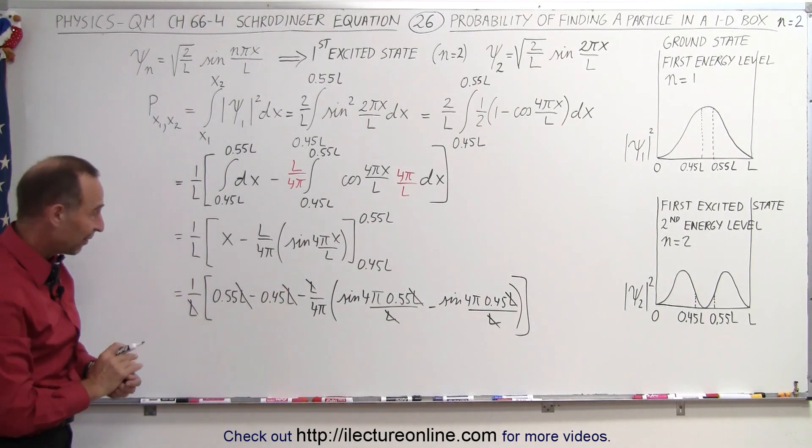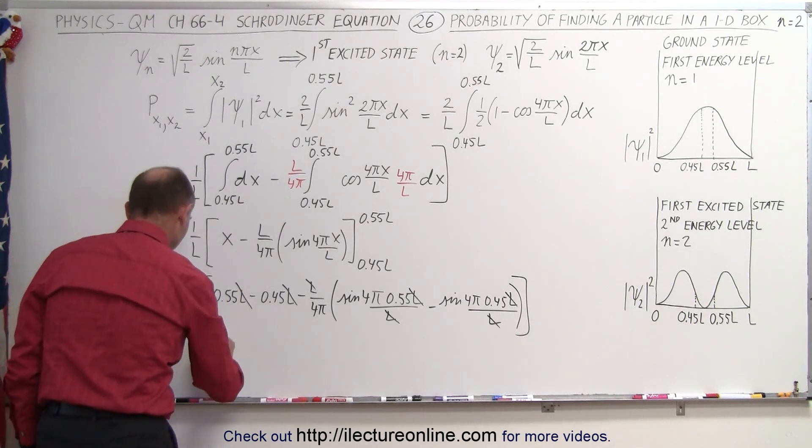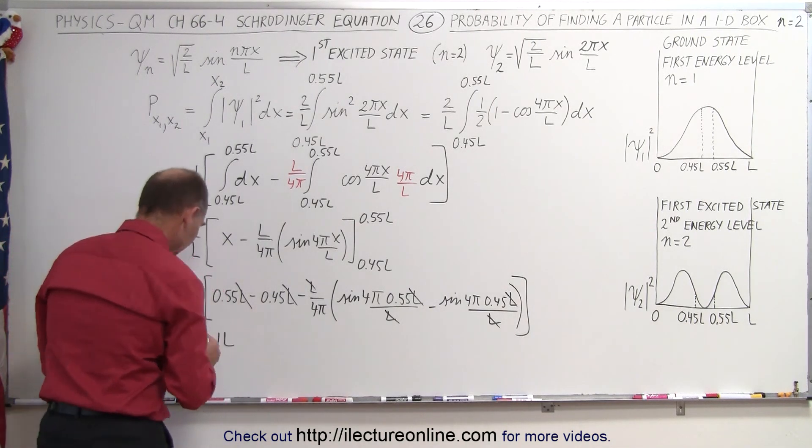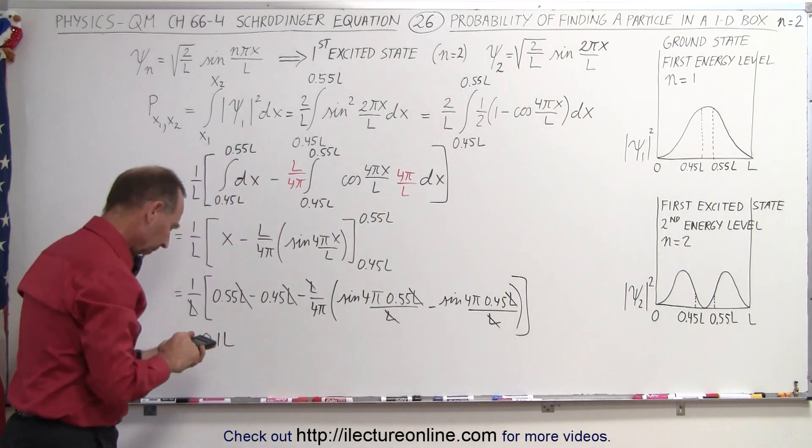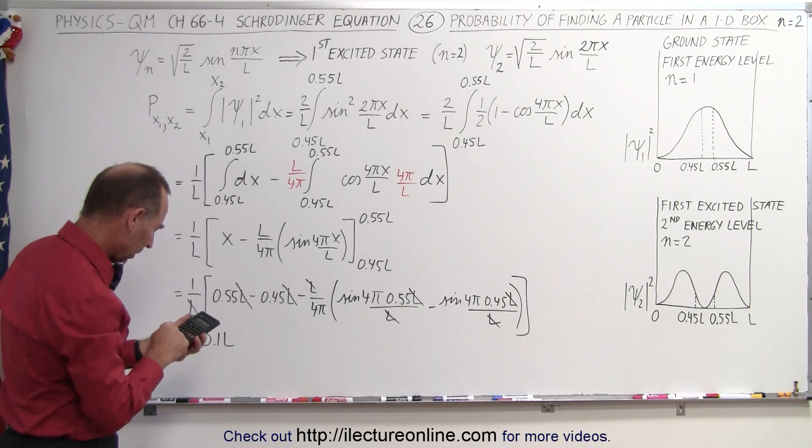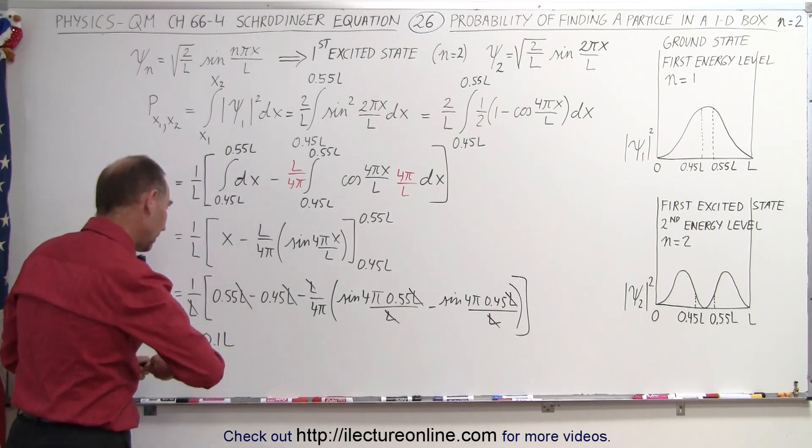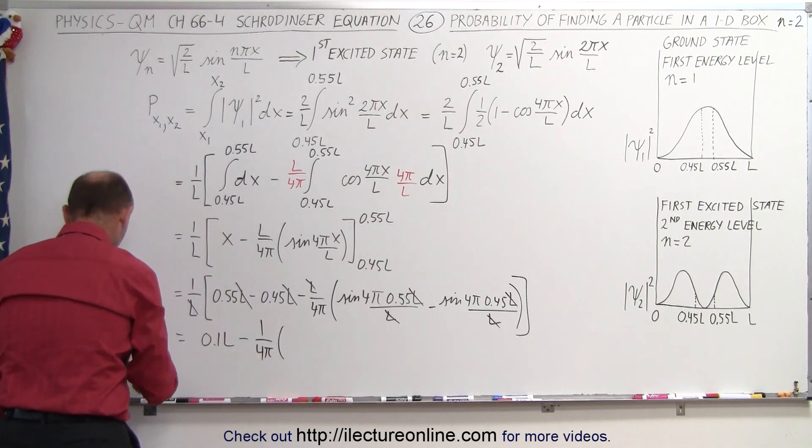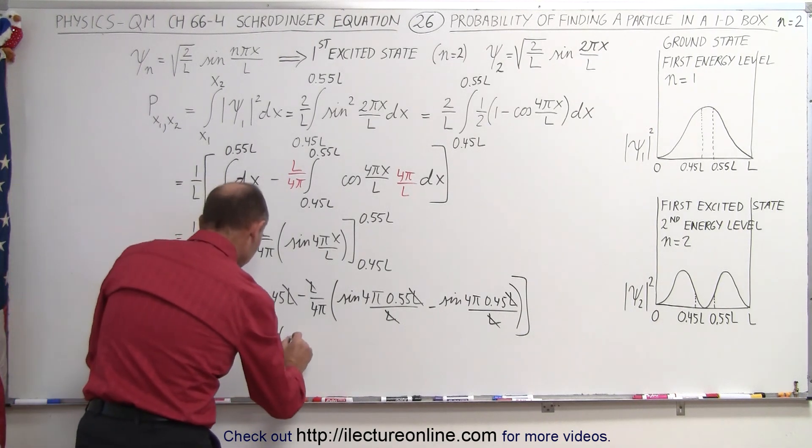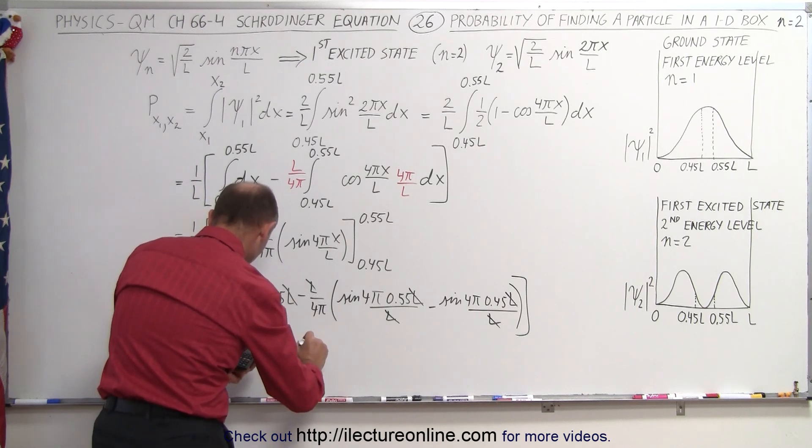This is equal to 0.1 and we need a calculator for the rest here. Again make sure we're in the radian mode. We get minus 1 over 4π times and when we calculate that we get 0.588